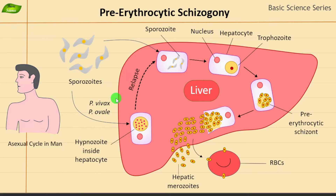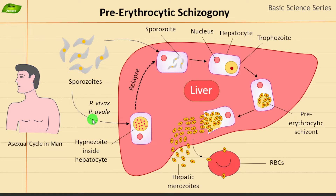Plasmodium is a genus of parasitic protozoa. It belongs to phylum Protozoa and it causes malaria, which is one of the potentially deadly diseases that can affect humans and animals. There are more than 200 species of Plasmodium that are known.